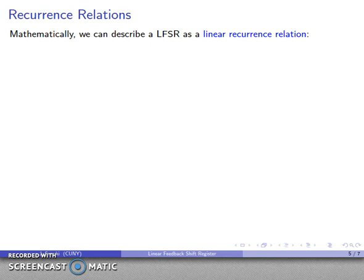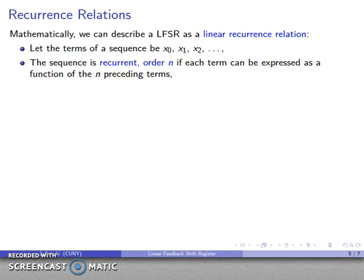Mathematically, we produce what's called a linear recurrence relationship. And so the general idea for any sort of linear recurrence relation is as follows. For the terms of some sequence x0, and so on, the sequence is recurrent order n if each term can be expressed as some function of the n preceding terms. Note that this doesn't mean that I have to use all n preceding terms. I can ignore some of the preceding terms, but if I use the nth term before as part of that function, it's order n.